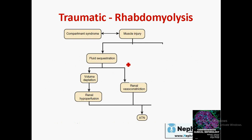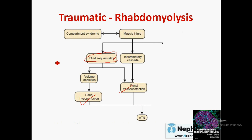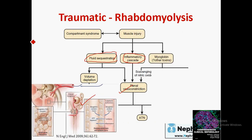It is not only myoglobin — many factors cause acute tubular injury. This graph summarizes the pathogenesis of ATN in rhabdomyolysis. Fluid sequestration inside the muscle: as more sodium enters, the muscle osmoses more water, causing hypovolemia, which causes renal hypoperfusion and renal vasoconstriction by renal autoregulation, leading to ATN. Also, inflammatory mediators released from injured muscle cause renal vasoconstriction and ATN.